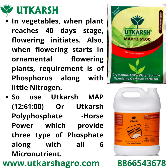In vegetables, when the plant reaches the 40-day stage, flowering initiates. Also, when flowering starts in ornamental flowering plants, it requires a very high quantity of phosphorus along with little nitrogen. So, for both these types of stages, use Utkarsh MAP 12-61-0 or Utkarsh Polyphosphate Horsepower, which provides three types of phosphorus along with all six micronutrients.